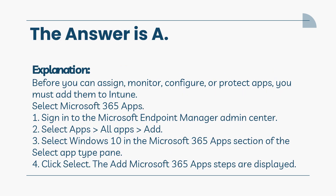The answer is A. Before you can assign, monitor, configure, or protect apps, you must add them to Intune. Select Microsoft 365 Apps. Steps: Sign in to the Microsoft Endpoint Manager Admin Center. Select Apps > All Apps > Add. Select Windows 10 in the Microsoft 365 Apps section of the Select App Type pane. Click Select. The Add Microsoft 365 Apps steps are displayed.